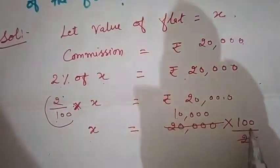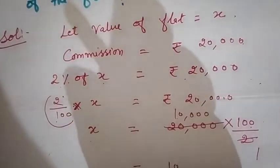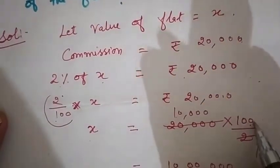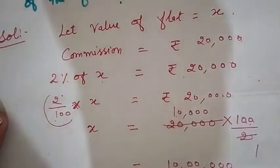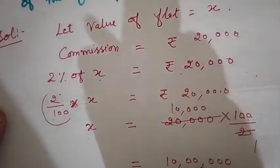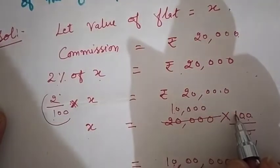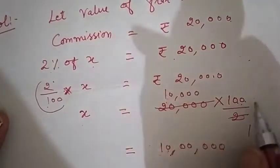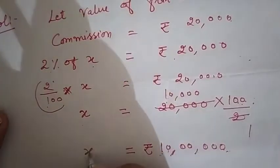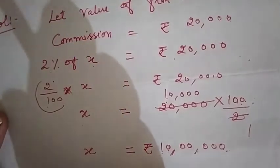अब 10,000 को 100 से multiply करेंगे तो 10,00,000 आएगा। 10,000 × 100 = 10,00,000 rupees। Value of flat is rupees 10,00,000। यह हमारा answer है।